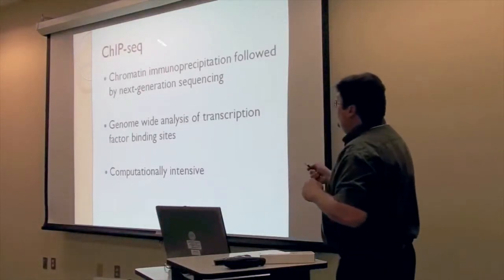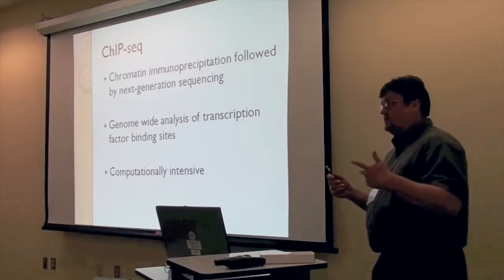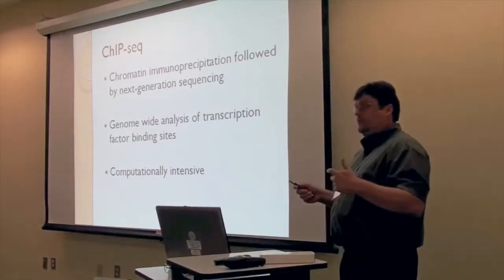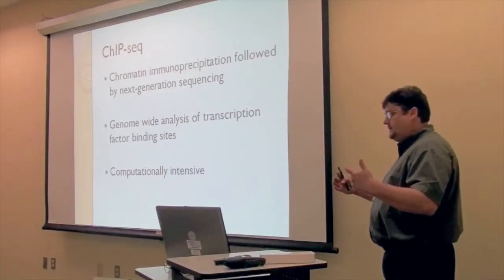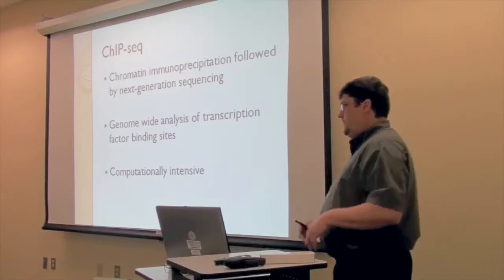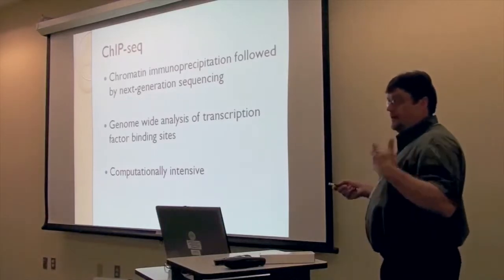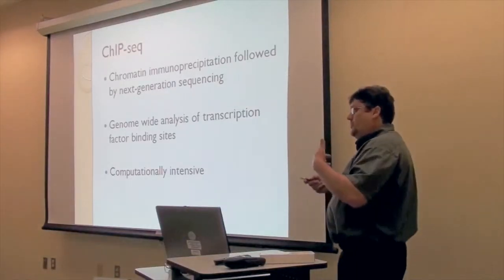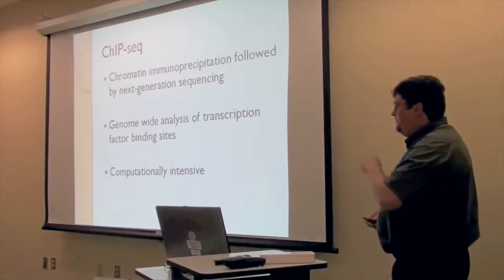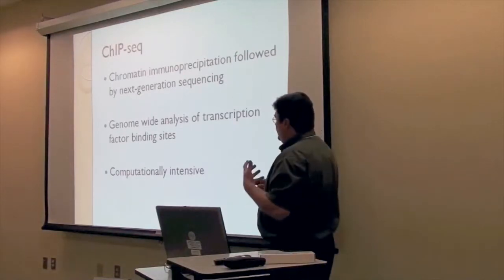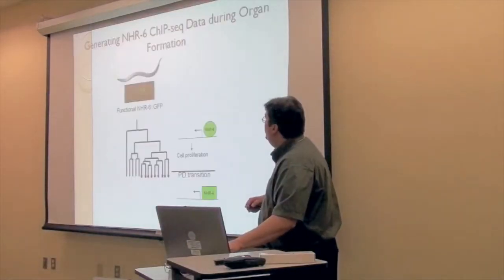Now you can generate transcription factor-bound fragments and instead of doing targeted analysis, you do massively parallel sequencing and identify all the precipitated fragments in the sample. This gives you a chance to see, on a genome-wide scale, all the transcription factor binding sites. As a result, you generate a lot of sequence data and you've got to take that data and get information out of it — it's very computationally intensive. I adopted this approach when I started my new Embree project.